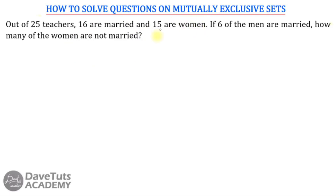Now the truth of the matter is that you cannot have the set of men and the set of women intersecting, because that is actually not possible — it's either a man or a woman.